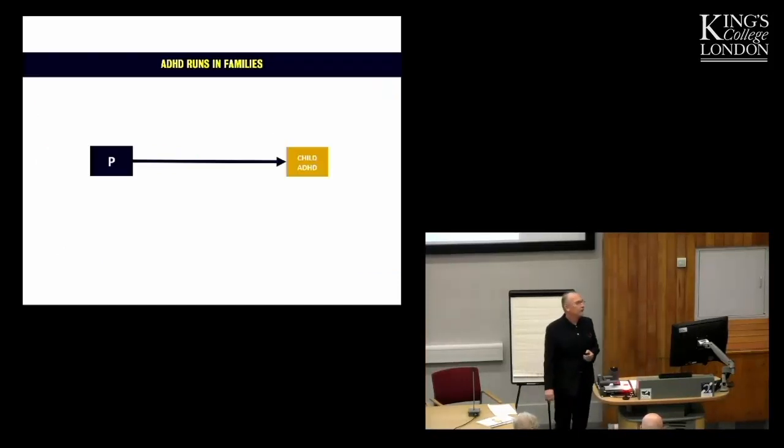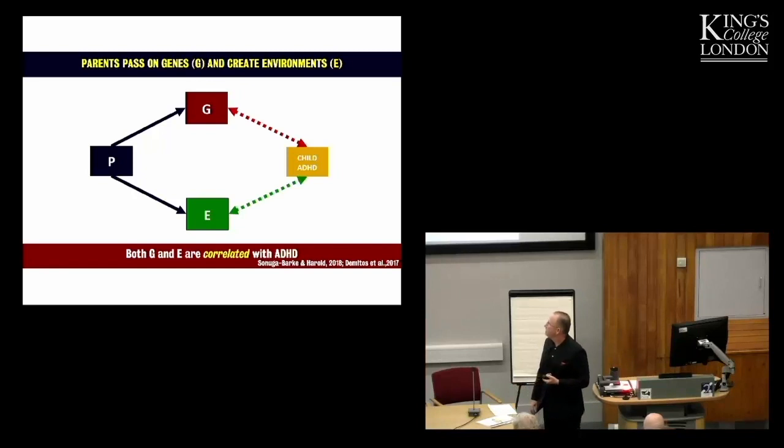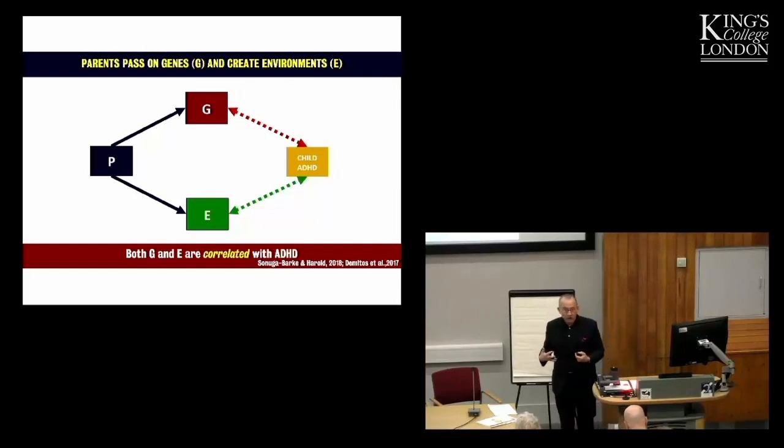So we've known for a long time that ADHD, of course, runs in families. Now the reason for that is complex to work out for one very good reason, that parents, of course, pass on the genes, but they also create the rearing environment. We also know that ADHD is correlated with both genetic risk and with environmental risk, correlated in italics there.